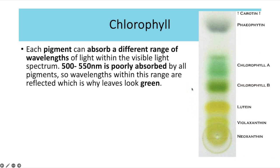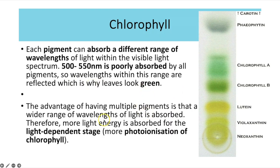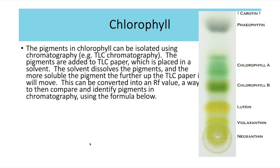Looking at chlorophyll more closely, each pigment can absorb a different range of wavelengths within the visible light spectrum, but 500 to 550 nanometres is poorly absorbed by all pigments. Wavelengths within this range are reflected, which is why leaves look green. The pigments in chlorophyll can be isolated using chromatography, which is one of the practicals you're expected to know. For example, TLC chromatography — thin layer chromatography — as shown in this image.